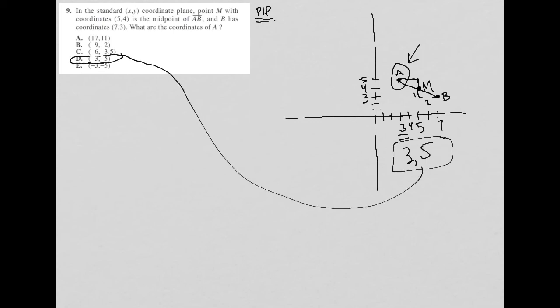Now, recognize, even if you did not use the slope method that I used, because we have a visual here, instead of just imagining this X, Y coordinate plane in our heads, we pretty much know where point A needs to be. And we know that 17, 11 for choice A, that's way out of the picture, that's way out here somewhere. 9, 2 is also way over here somewhere, so that can't be it. 6, 3.5, that doesn't make sense either.